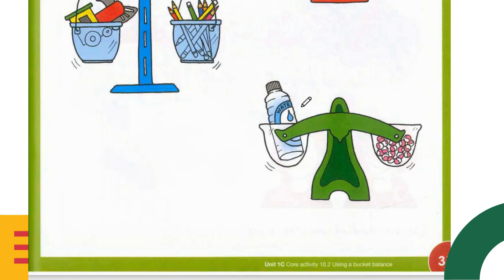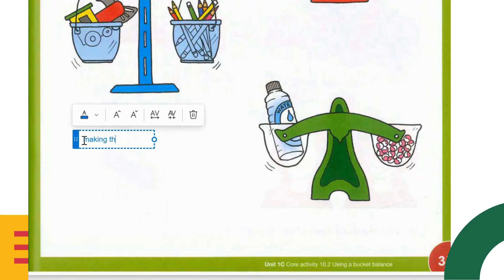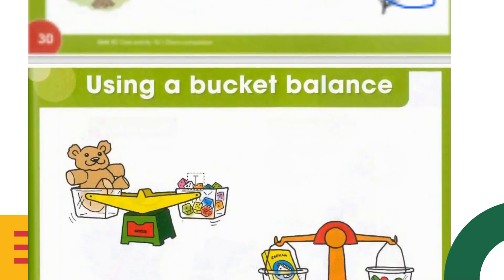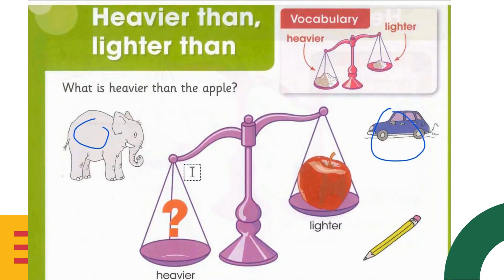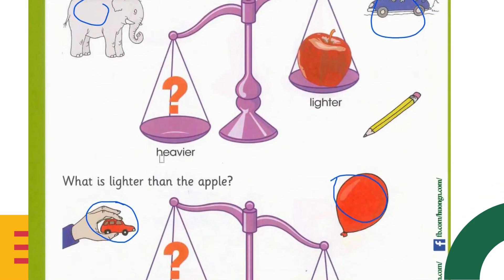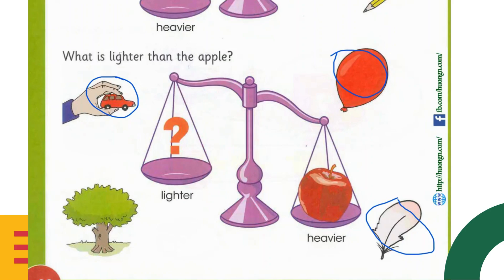Balance means making things equal. So this is what we learned here. Heavier than the apple: elephant and car. Lighter than the apple: toy car, balloon, and feather. I hope you like this video. Keep watching my channel, bye bye, take care!